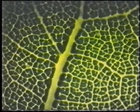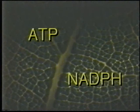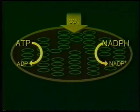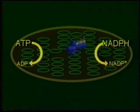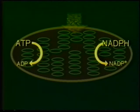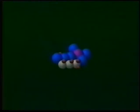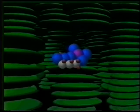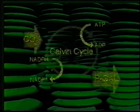The function of the light reactions is to make ATP and NADPH. These energy carrier molecules are used in the complex process of converting carbon dioxide into a three-carbon compound from which other organic molecules can be assembled. The three-carbon molecule, phosphoglyceraldehyde, or P-gal, is synthesized in the stroma of the chloroplast through a series of reactions called the Calvin Cycle.